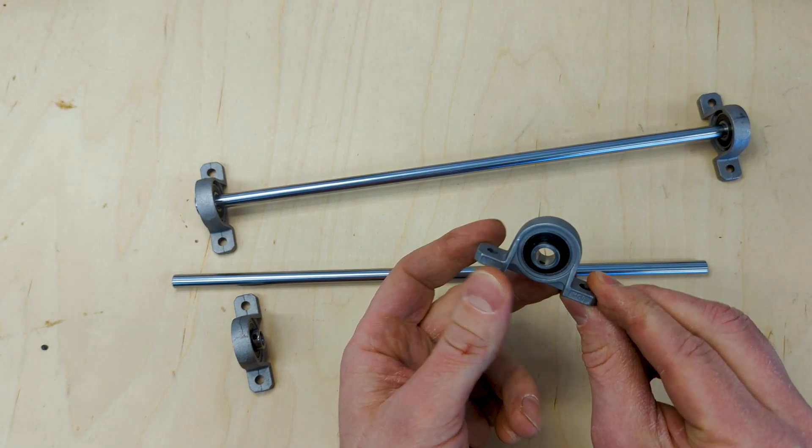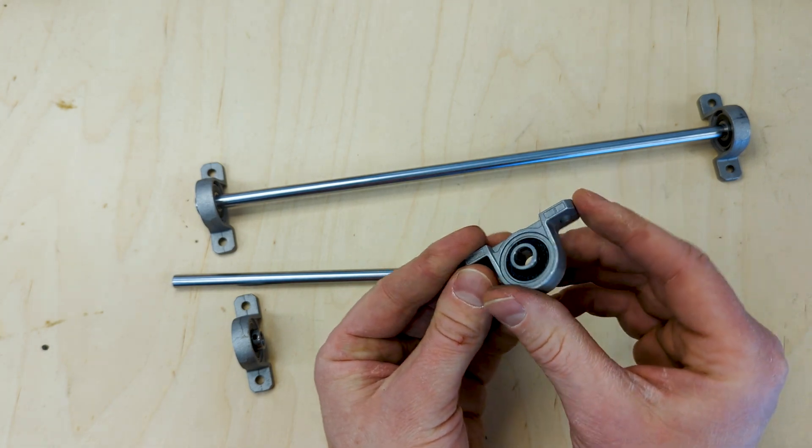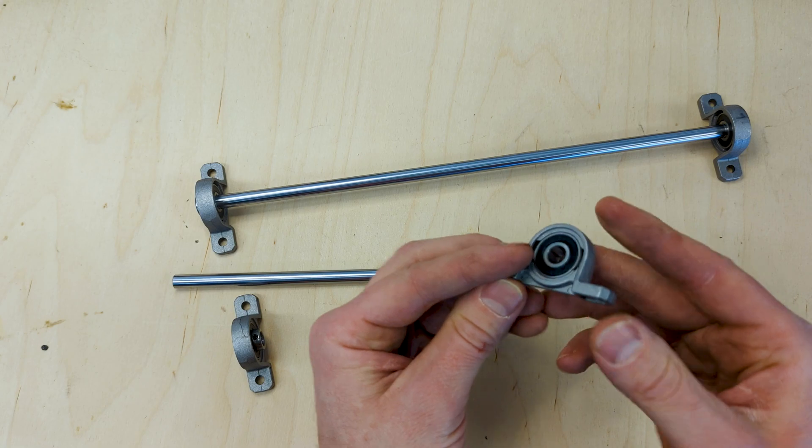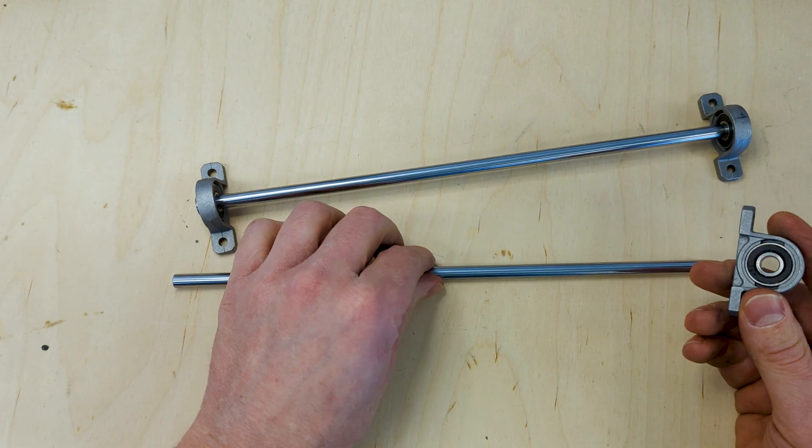They're quite small, but pillow blocks come in all kinds of sizes for different shaft diameters and use with different motors and torques. These pillow blocks have a bearing on the inside and they accept an eight millimeter shaft.